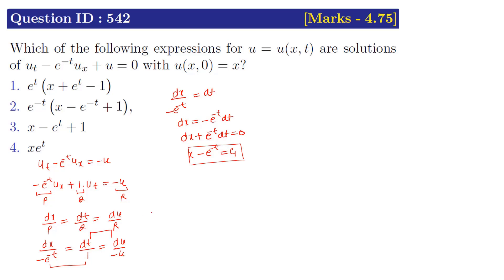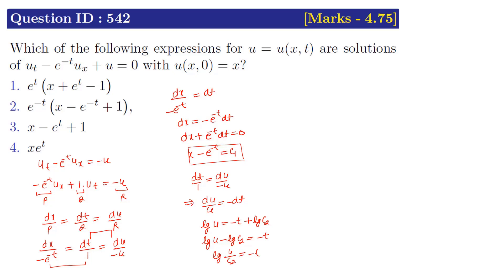Taking the second and third terms: dt/1 = du/(−u), which gives du/u = −dt. Integrating both sides: log u = −t + log c₂, so log(u/c₂) = −t, which implies u/c₂ = e^(−t). Therefore c₂ = u · e^t.